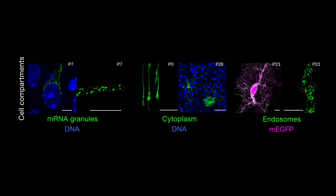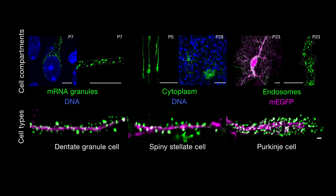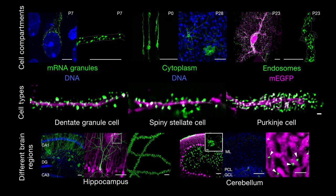The researchers showed that SLENDER could be used to label a variety of proteins, located in different compartments of cells, in different cell types, and in different regions of mouse brains of various ages.